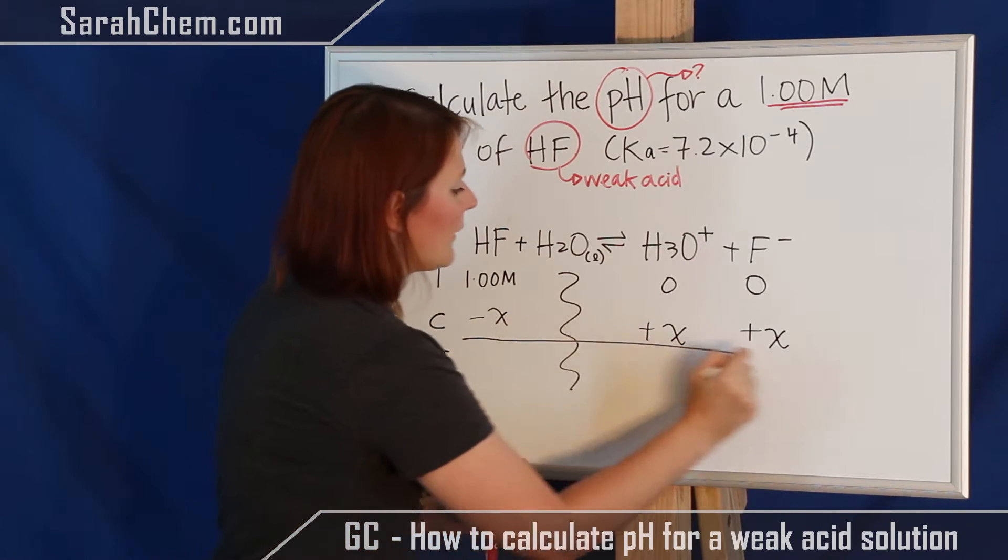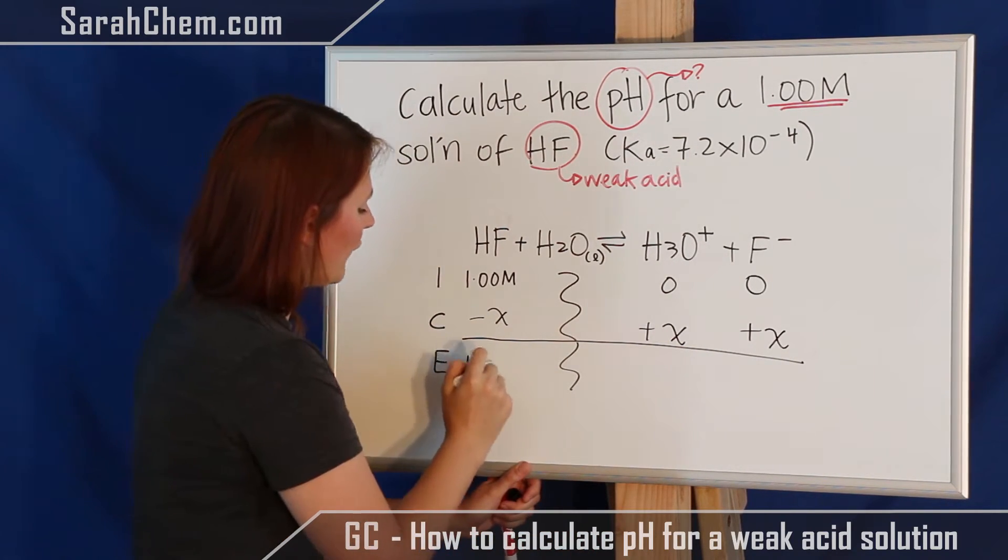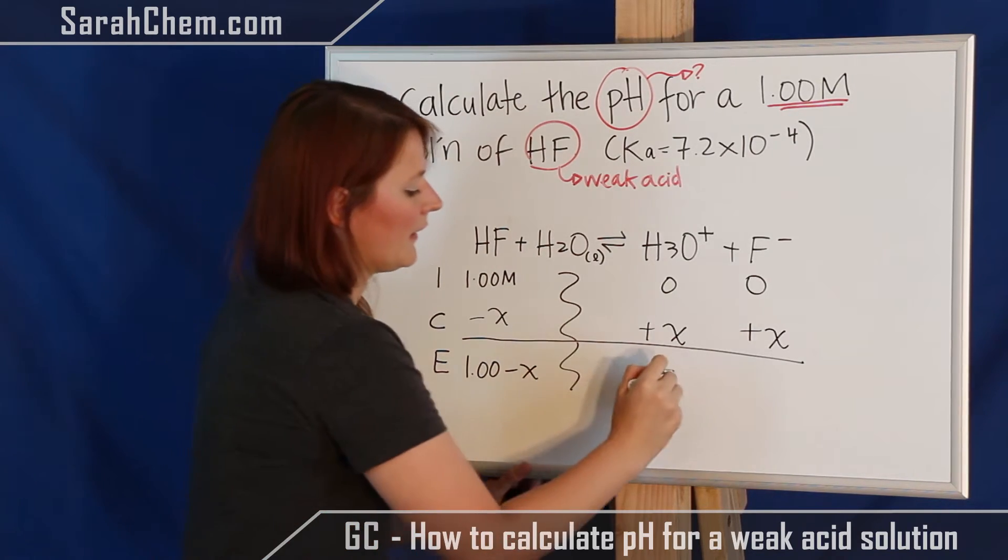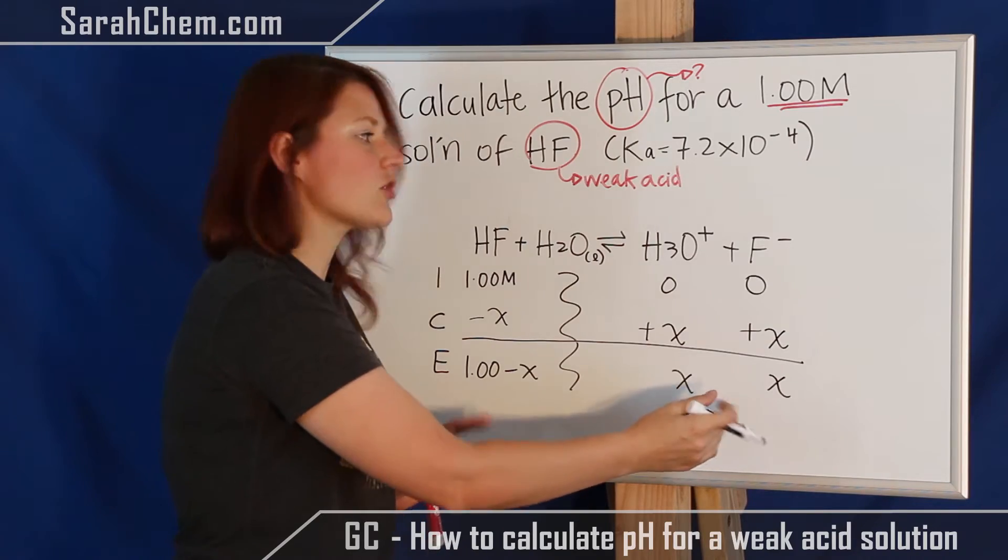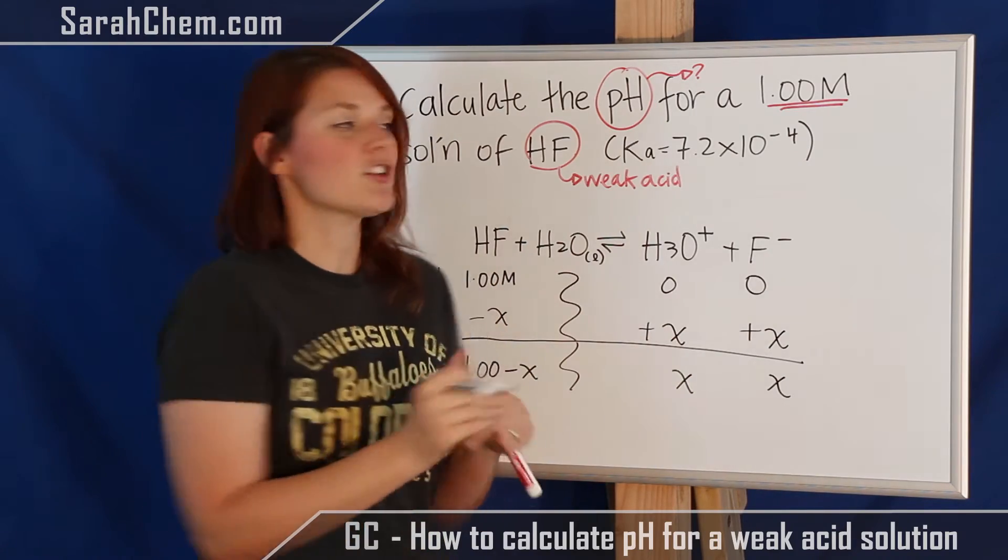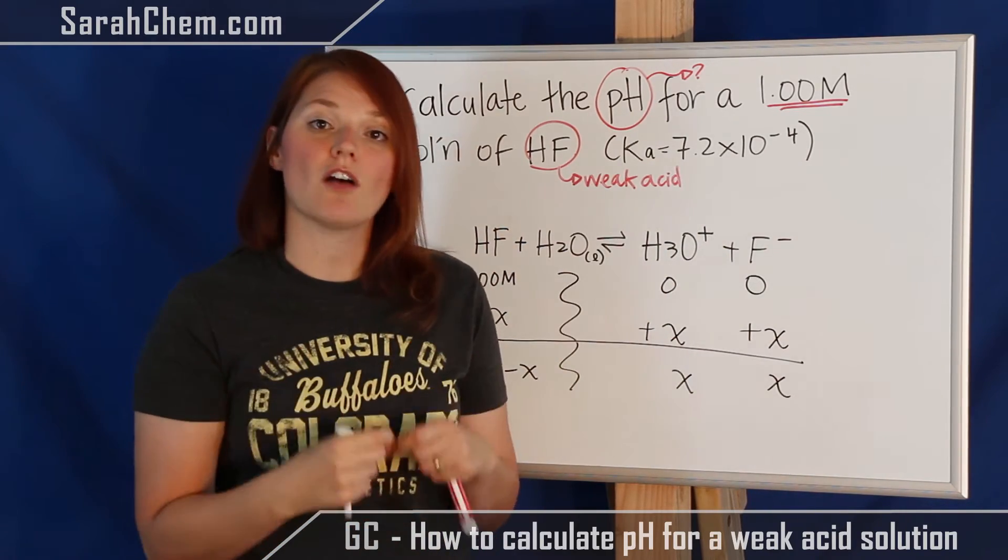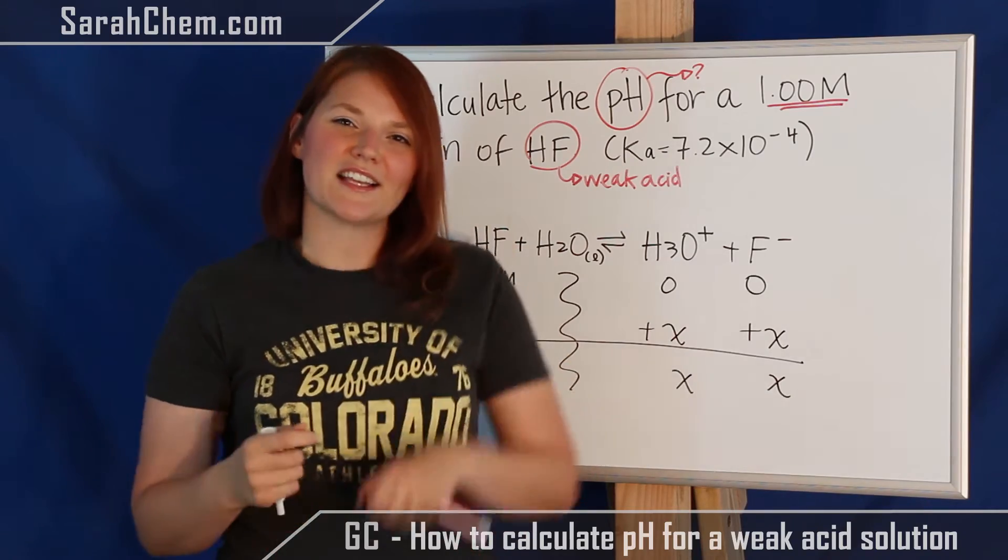And then at equilibrium, I just have to add this up. So I have 1.00 minus x, x, and x. So now I can take this information, use the Ka expression and the Ka value to solve for the value of x. Let's take a look at how we do that.